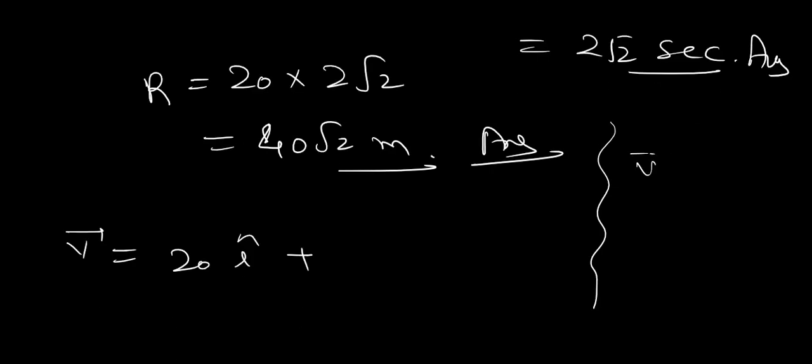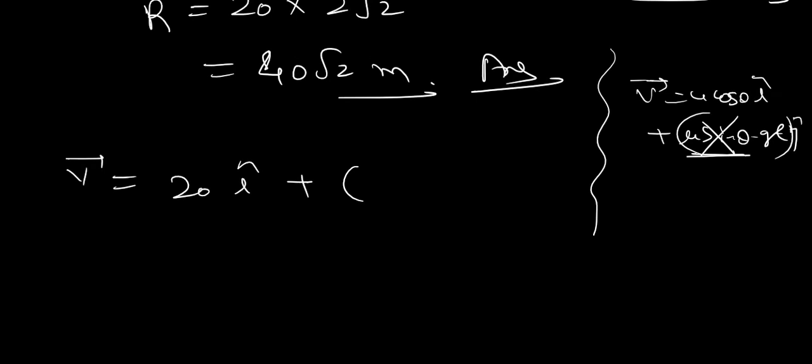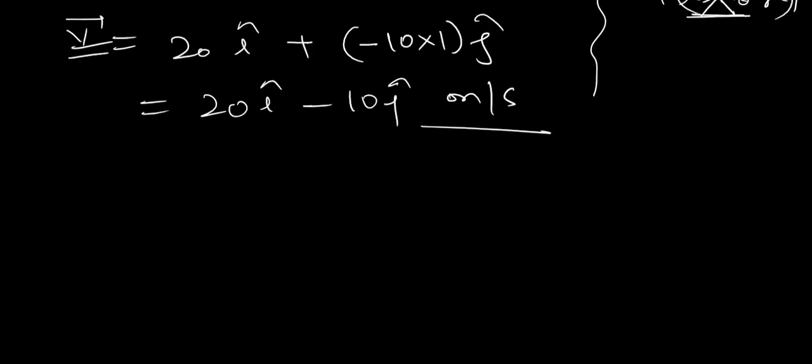V is equal to u cos theta i cap plus u sin theta minus g t j cap. Initially, this part is 0, u sin theta. In vertical direction, initially, velocity is not. So, my answer is minus g into t j cap. So, it will be 20 i cap minus 10 j cap meter per second. So, this is my velocity at t equals to 1 second.